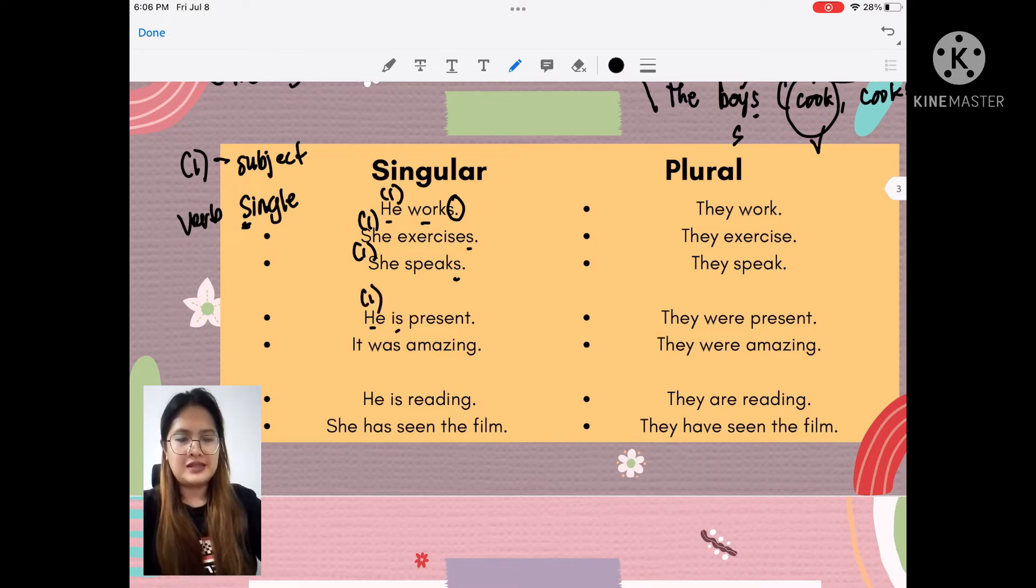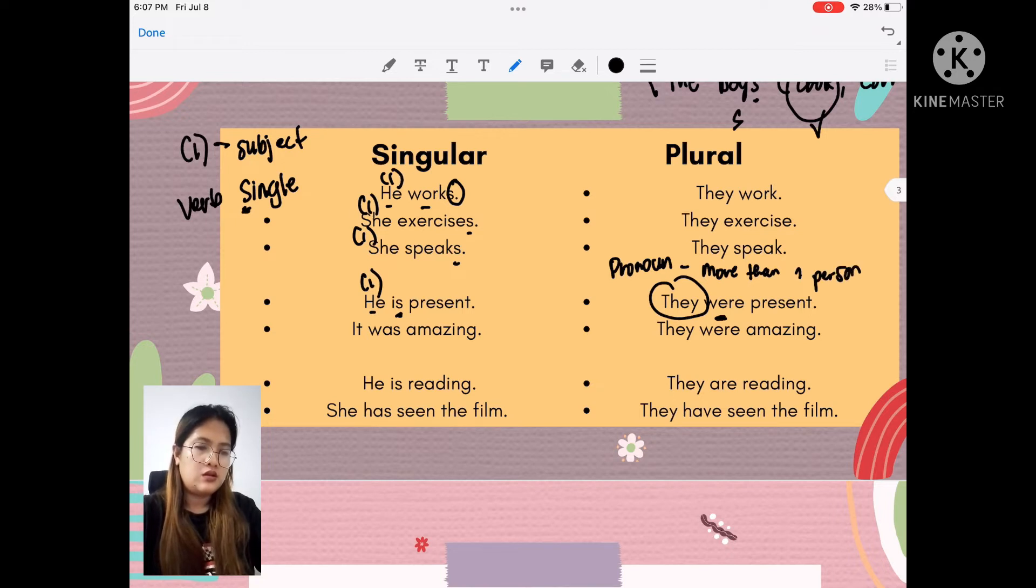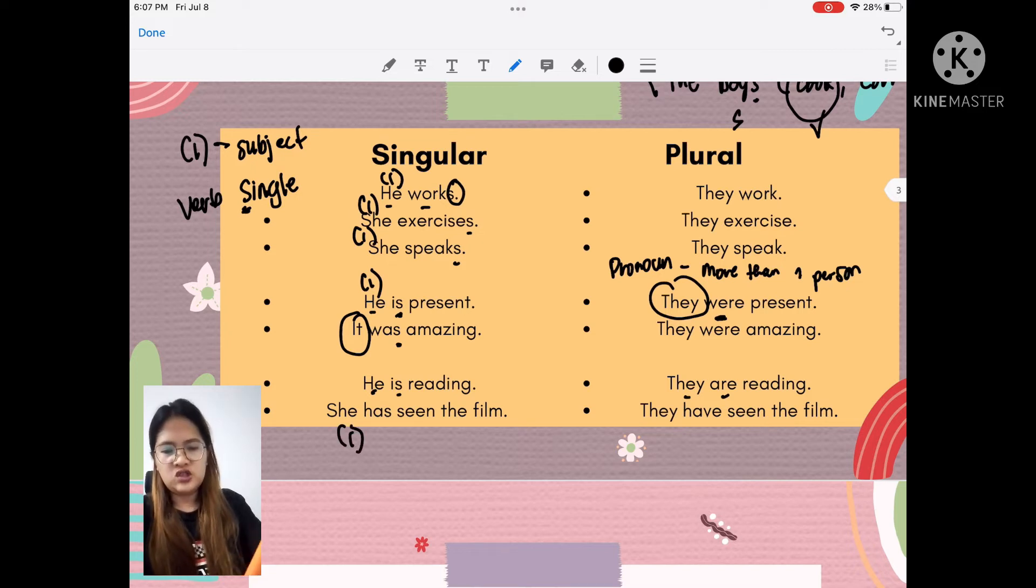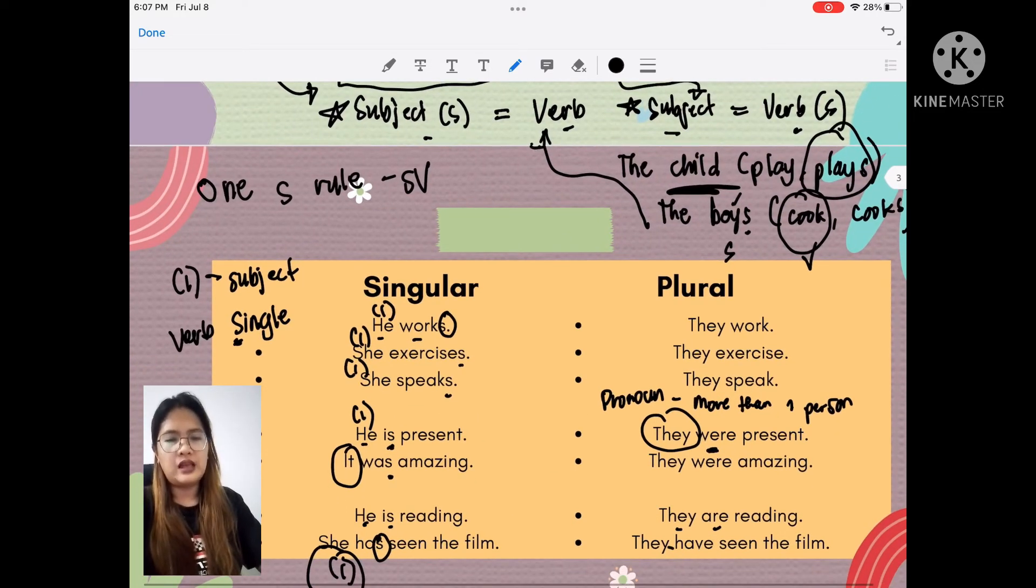She exercises. They exercise. She speaks. They speak. Tigi isa lahat to. Tigi isa. Kaya, may S. Ito, madami sila. Kaya, walang S. Siguro pa rin hindi mo makalimutan. Kapag isa, isa lang siya, yung subject mo, single. Single. Single. So, kailangan may S sa dulo, ang verb. Kapag madami sila, kaya couple na, hindi na siya single, wala ng S sa dulo. Next. He is present. Again, isa lang. Kaya, yung is pa rin, may S pa rin. They were present. Ito, madami na to, kaya plural. Itong verb is plural na din. Wala din siyang S. So, technically, kapag they, this is more than one person. This is a pronoun referring to more than one person. It was amazing. One lang to, ang it. So, may S. Singular. Was amazing. He is reading. They are reading. She has seen the film. Single siya. Mag-isa. Kaya may S. Ayan. They have seen the film. Madami sila. Kaya hindi single. Walang S.